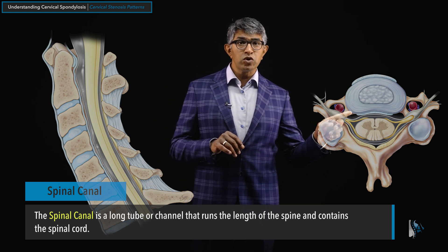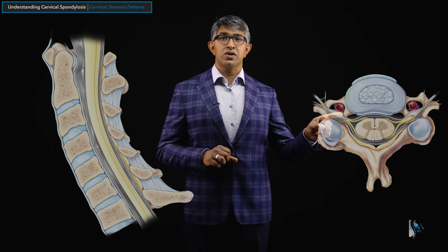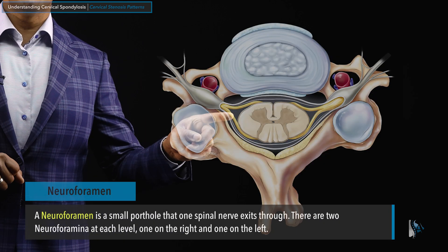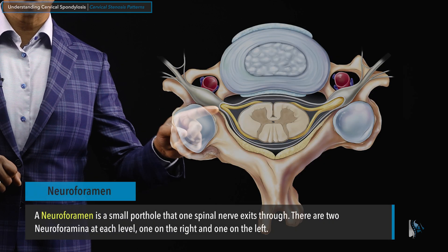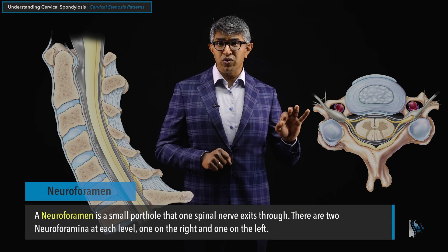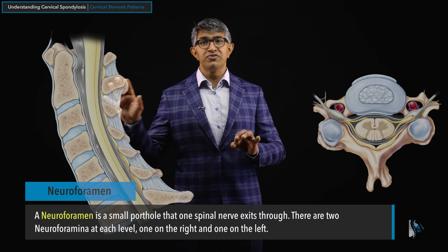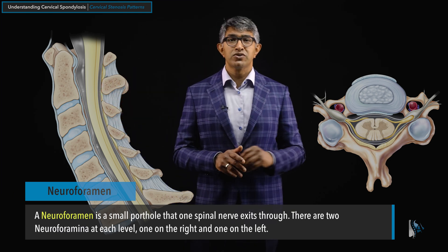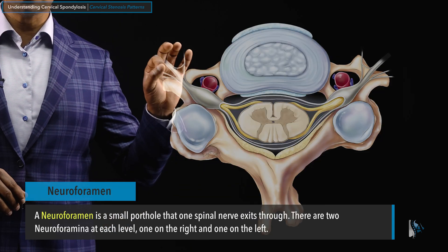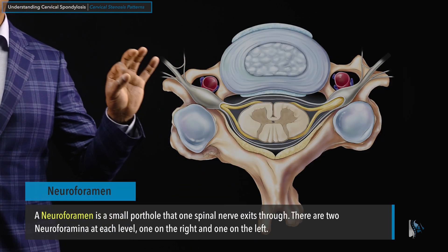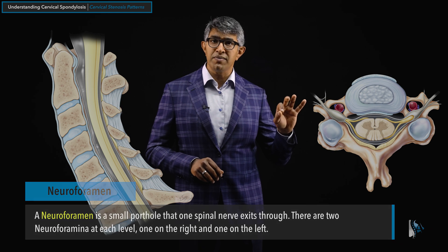At every level there's a little porthole — this is the second space to talk about, called the neural foramen. That's the structure through which the nerve exits. We've spoken about that when discussing uncovertebral hypertrophy and facet hypertrophy — those cause narrowing of this porthole, called the neuroforamen, which is where the nerves leave.